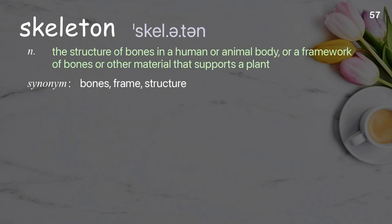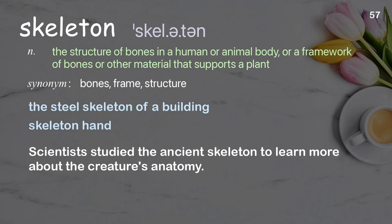Skeleton: The structure of bones in a human or animal body, or a framework of bones or other material that supports a plant. Examples: The steel skeleton of a building. Skeleton hand. Scientists studied the ancient skeleton to learn more about the creature's anatomy.